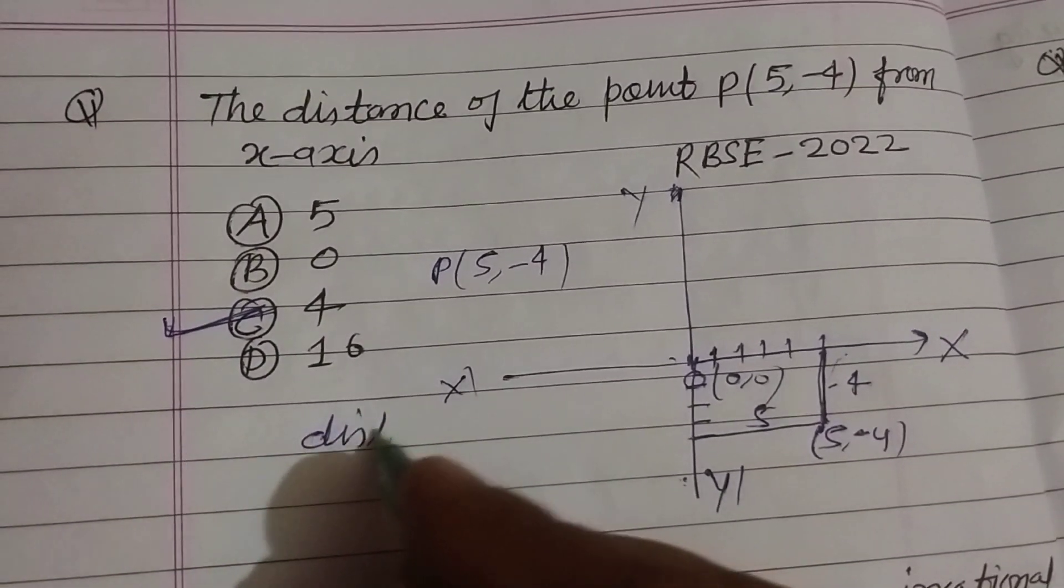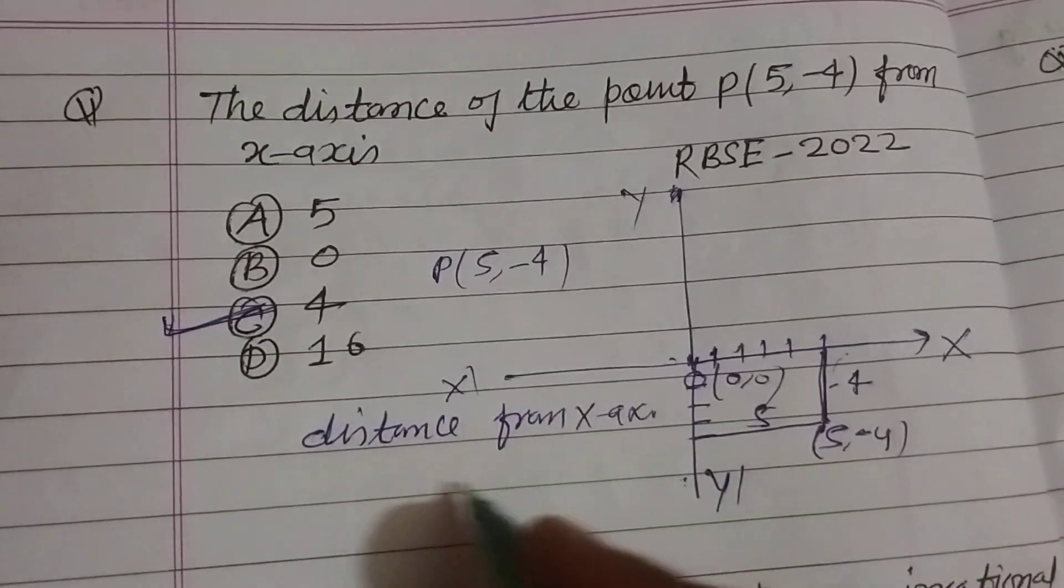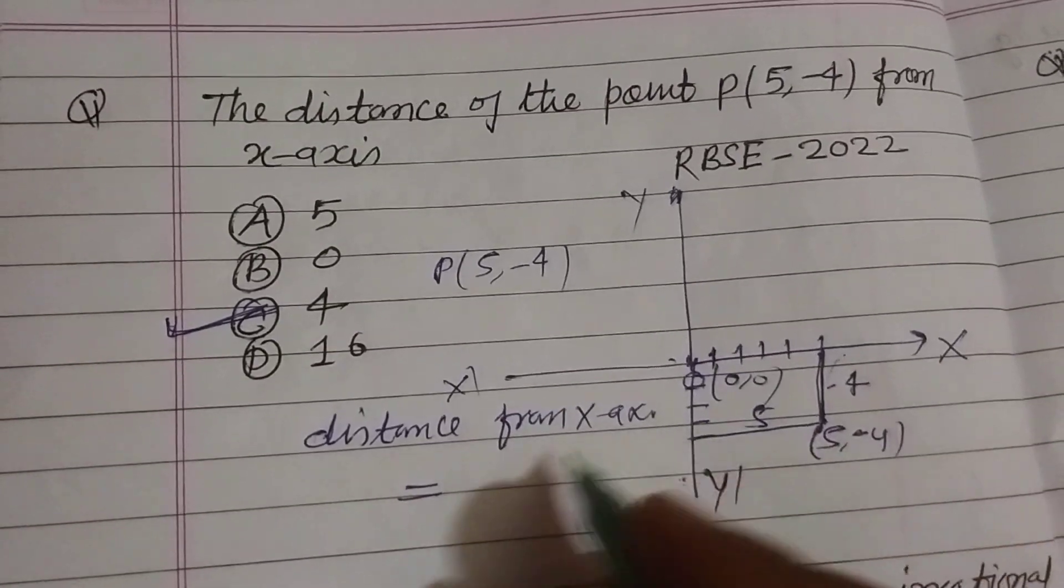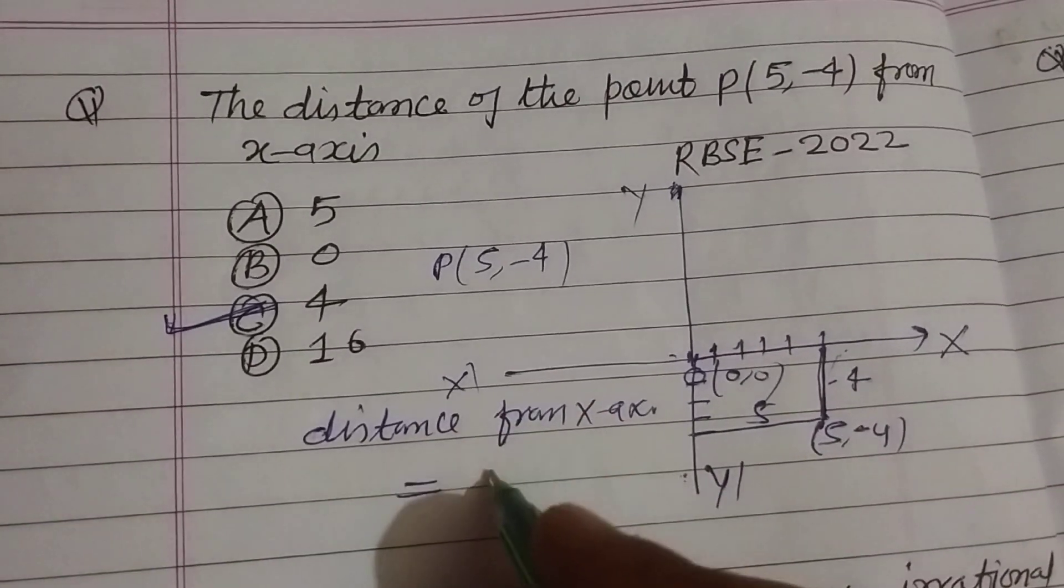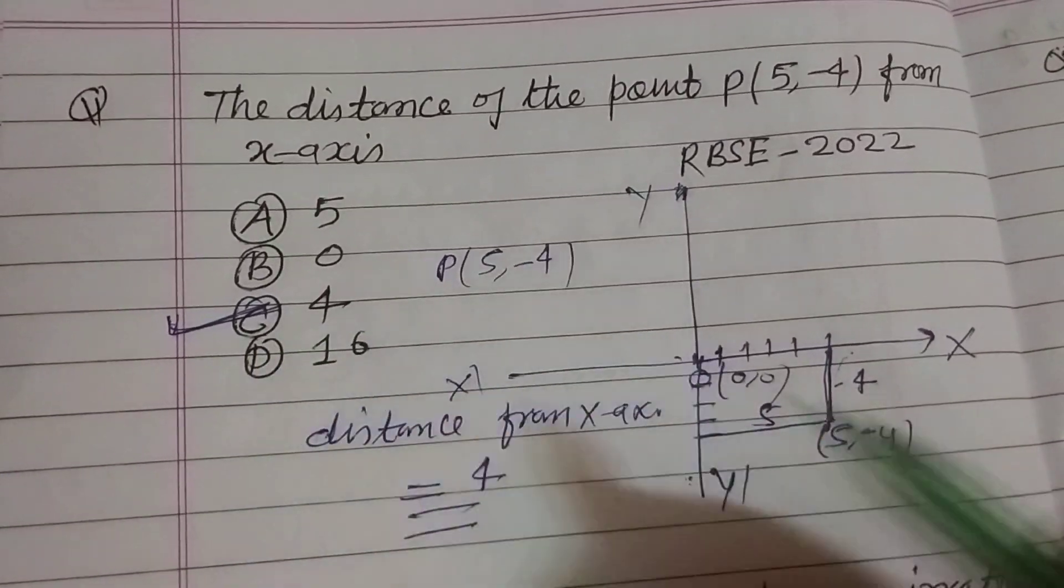Distance from x-axis. So this distance, this is the y-coordinate. So 4. So the answer to this question is C.